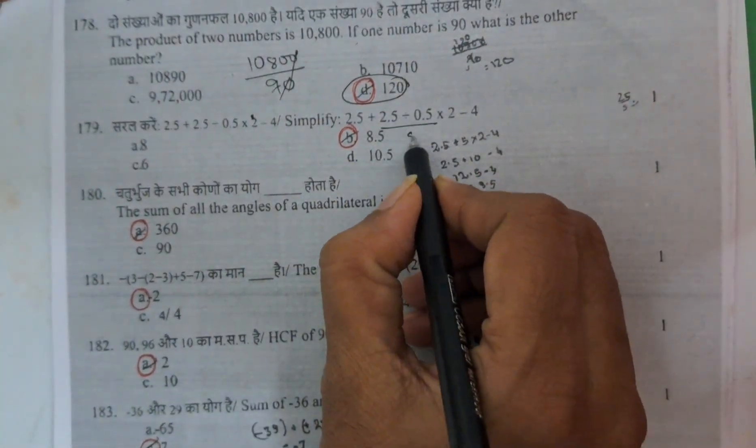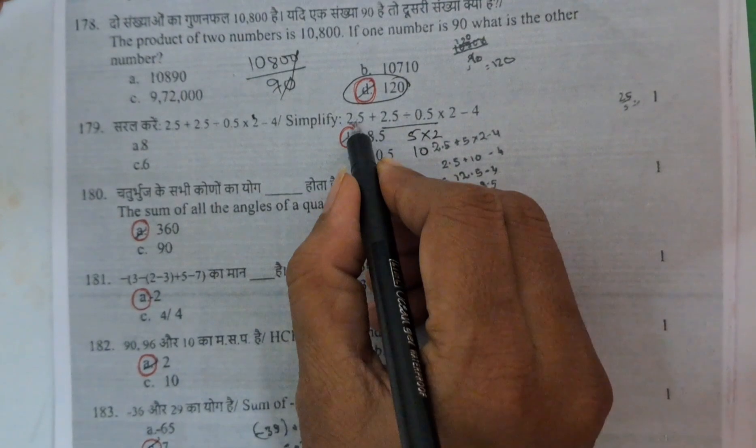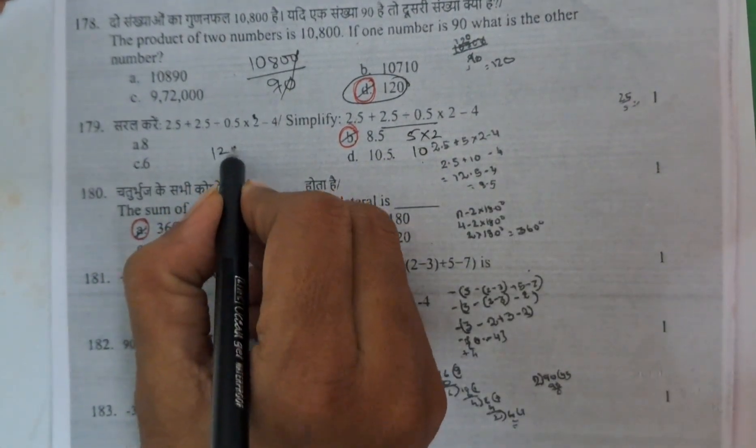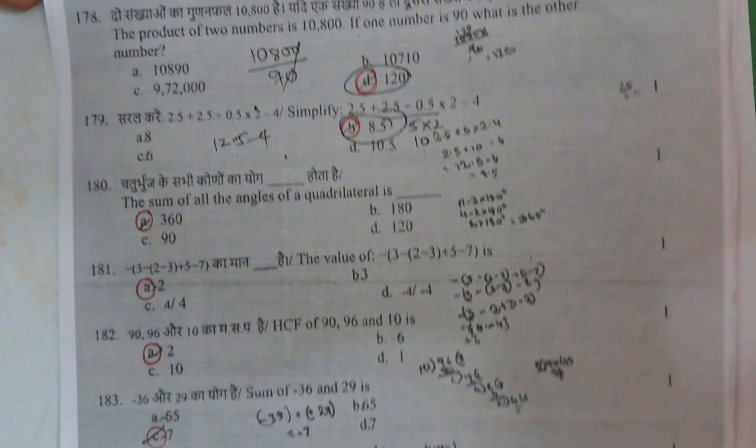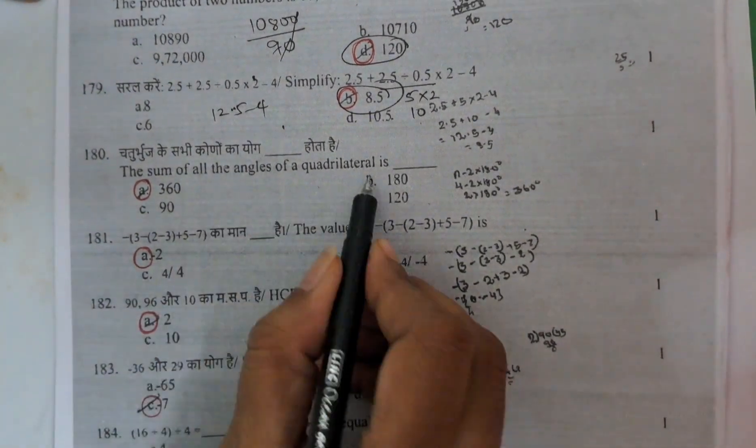Here simplification. First if you simplify here, 5 times 2 is 10. 2.5 plus 10 is 12.5 minus 4. Here answer is 8.5.